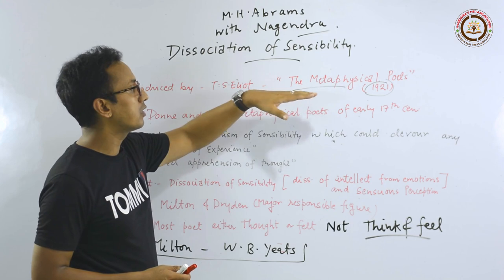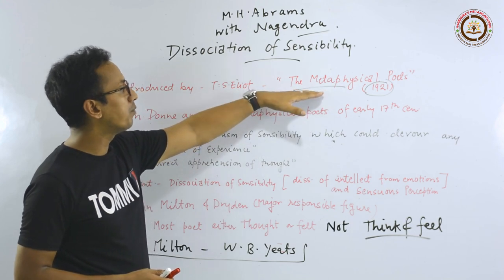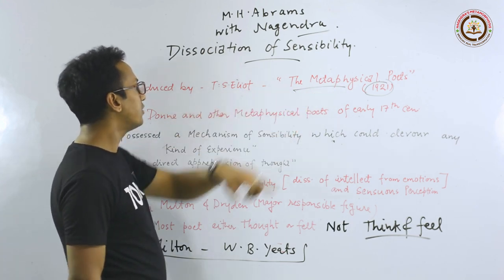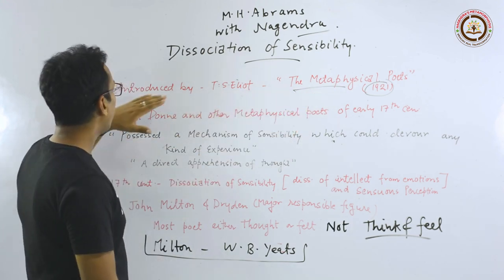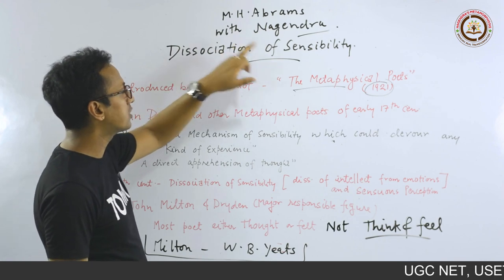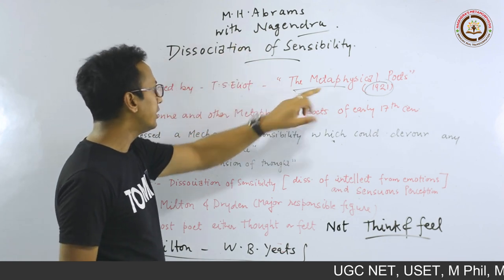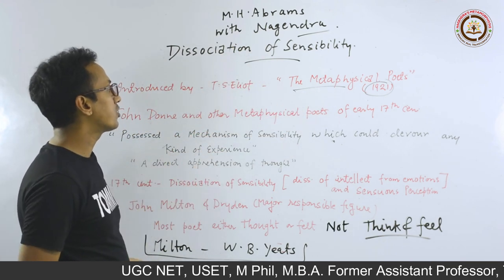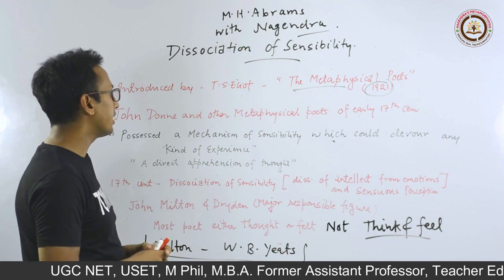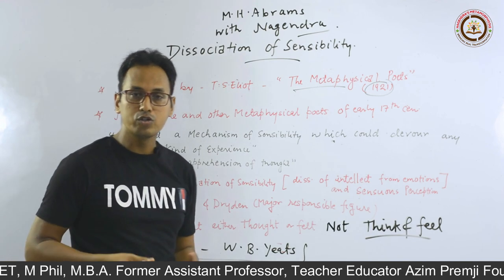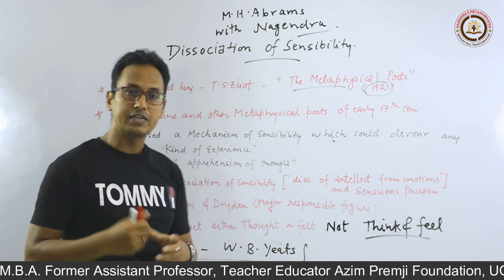It is very important to know the proper and correct name of the essay. The essay was 'The Metaphysical Poets,' and Dissociation of Sensibility occurred in this essay. So what is this Dissociation of Sensibility and how was it introduced by T.S. Eliot?